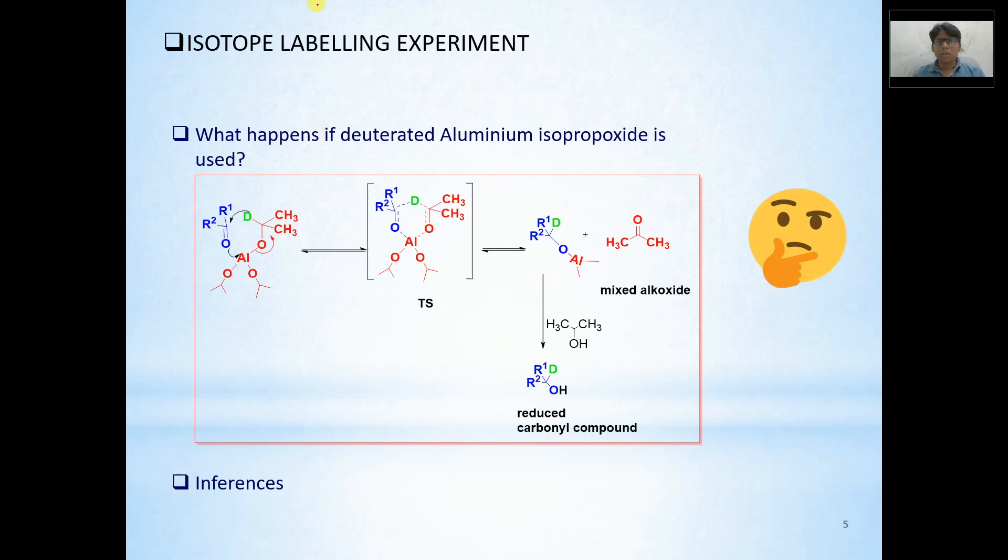Next, very important point is isotope labeling experiment. In this case, one of the hydrogen is being substituted by deuterium. Deuterium is exchanged with hydrogen and the effect was seen. What is observed is that what happened in case of hydrogen was happening in case of deuterium. Here deuteride was migrating with all the electron with itself. Deuteride was migrating and six-member transition state was formed. Likewise, mixed alkoxide was formed. Acetone, like previously, was removed.